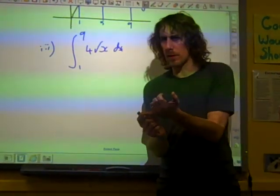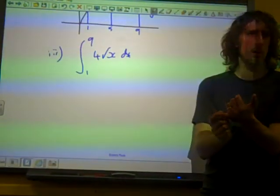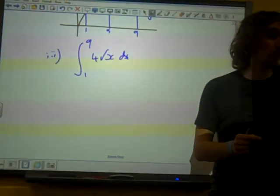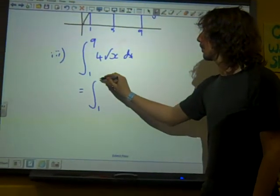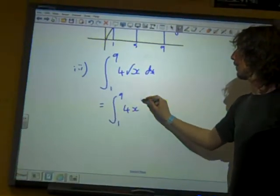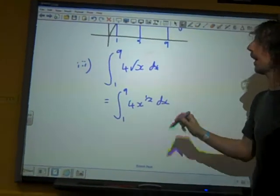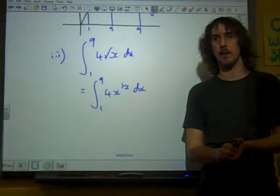What are we going to do before we integrate this? Put it in a different form, what like? We're going to put it in index form, so we're going to write it as four x to the half, because root x is x to the half.